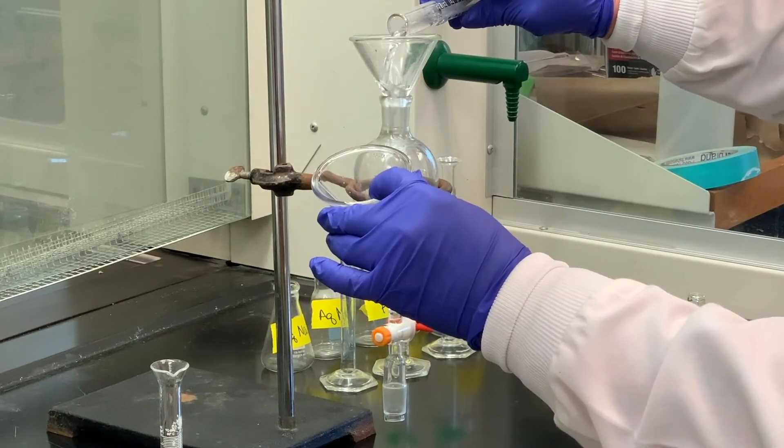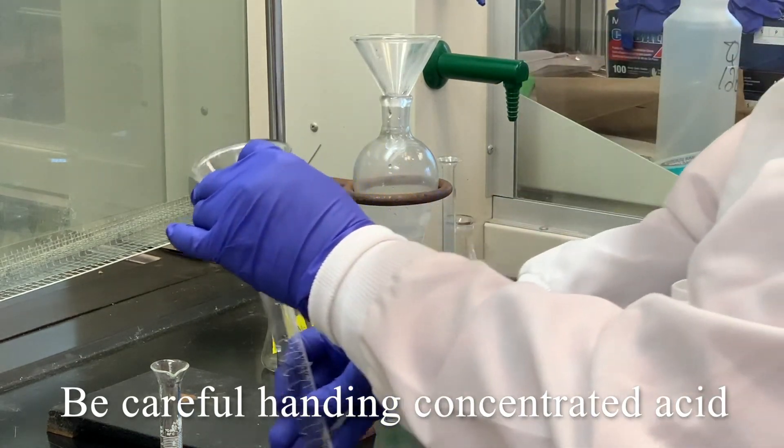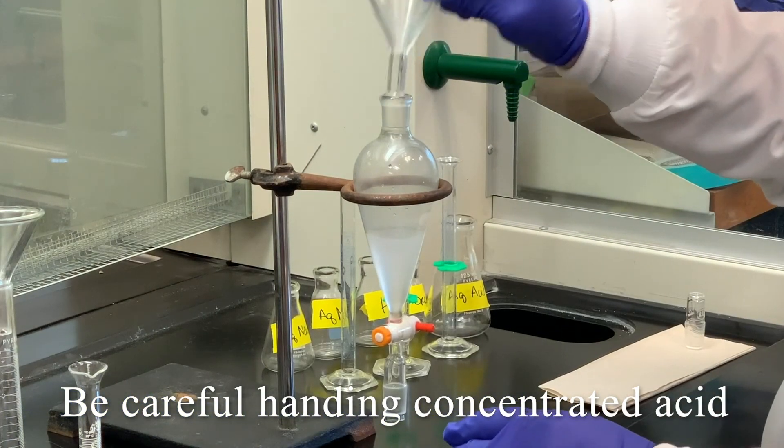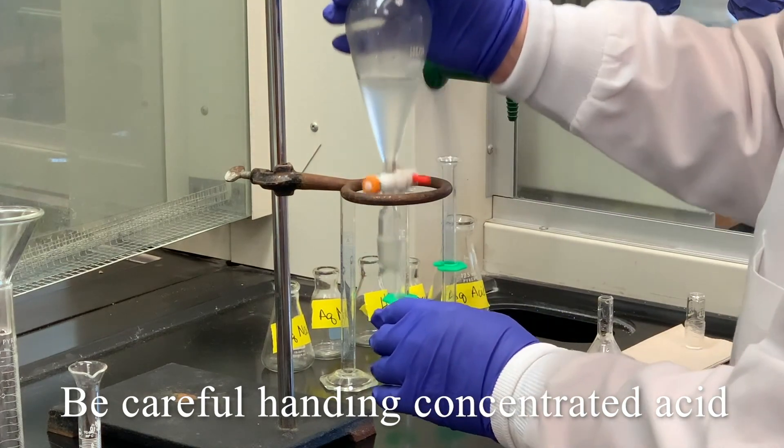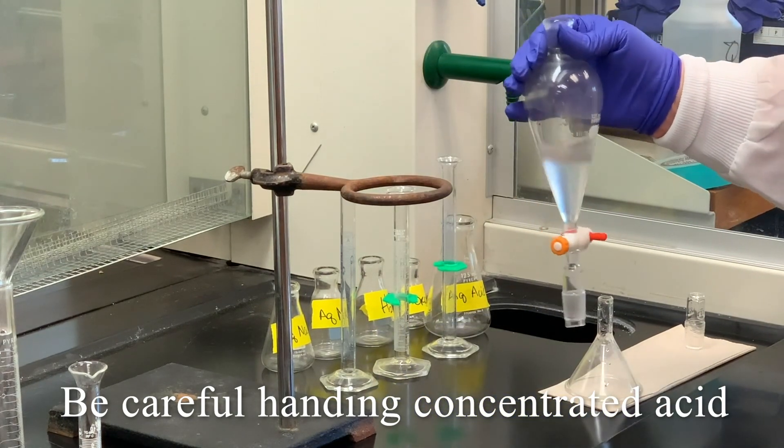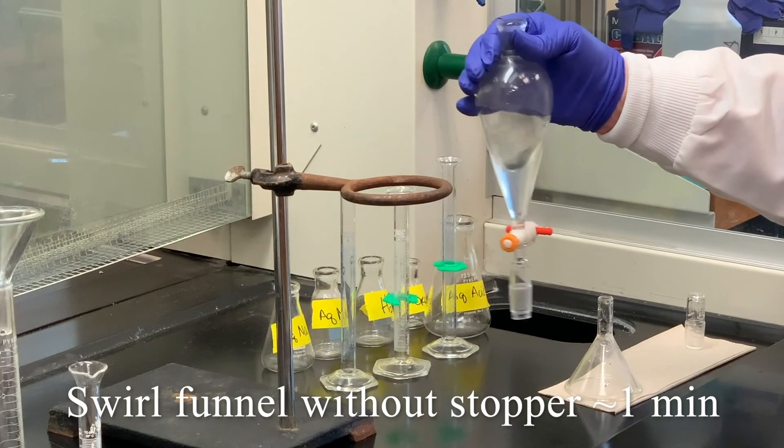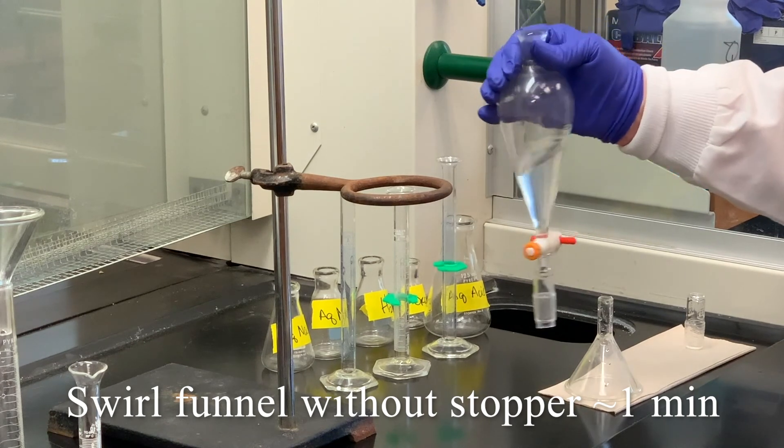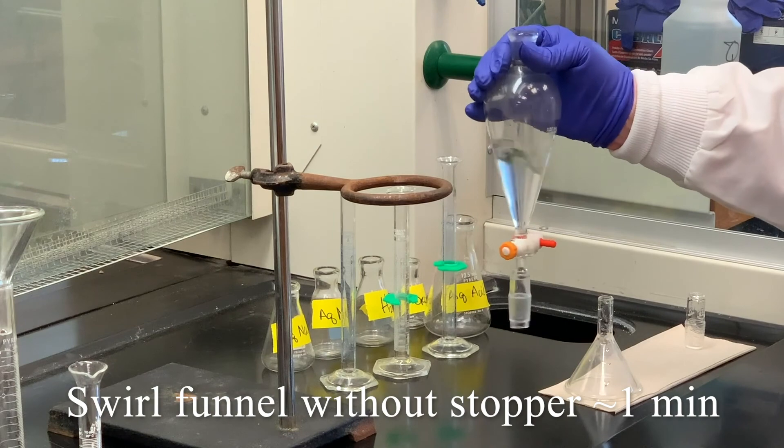And again, be careful with the concentrated hydrochloric acid. And initially, what we want to do is just kind of swirl this without the stopper for about a minute. So I'm just going to kind of swirl it a little bit. And I don't have to worry about venting since it is open to the atmosphere here. So just kind of swirl it for about a minute.